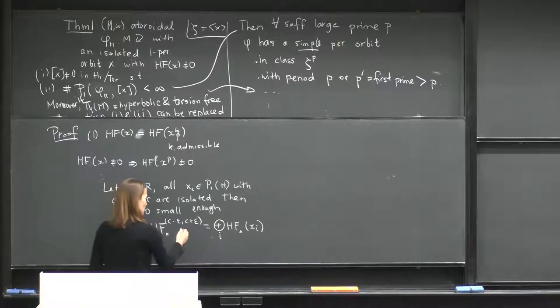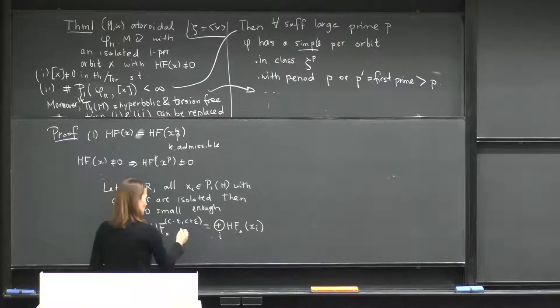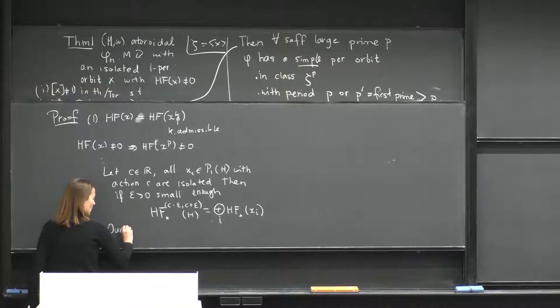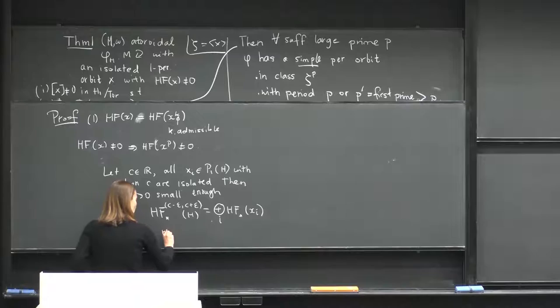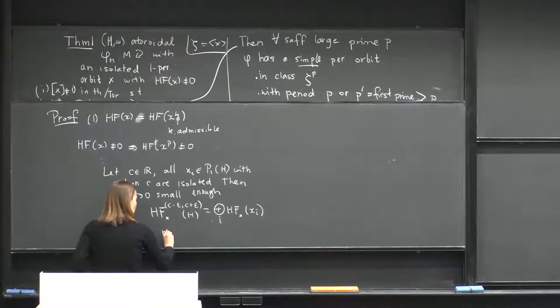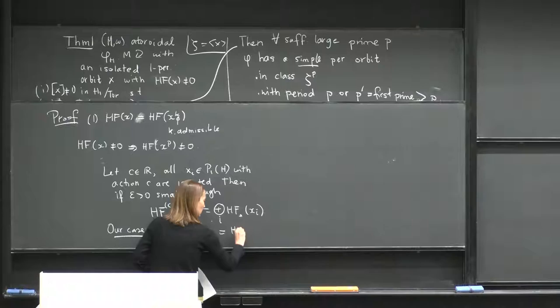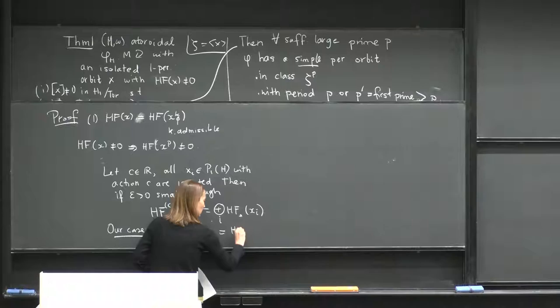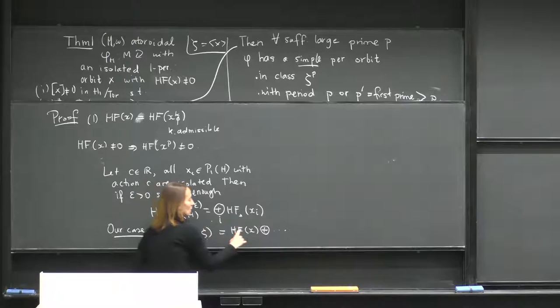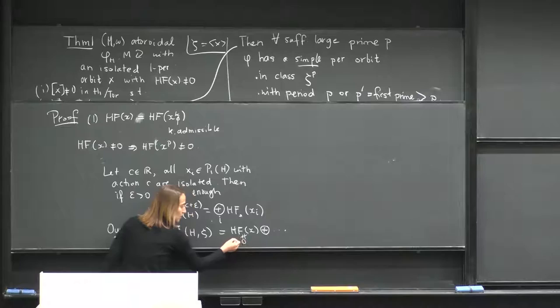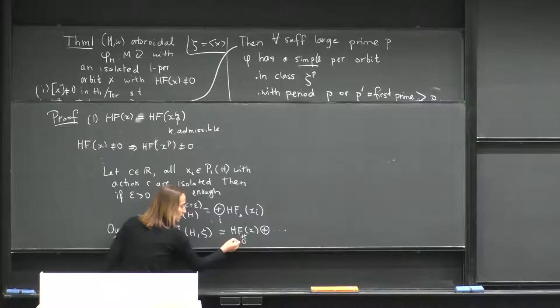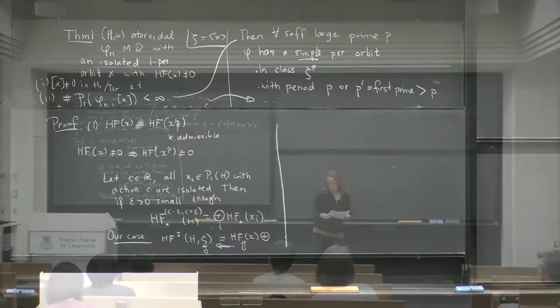In particular, what this tells us is that there should be some isomorphisms here. In our case, we will be looking at filtered Floer homology in an interval with endpoints outside the action spectrum. Here x is the periodic orbit from the theorem, and the interval will be a small interval centered at the action of x. Knowing that local Floer homology is non-zero tells us that this filtered Floer homology is non-zero.